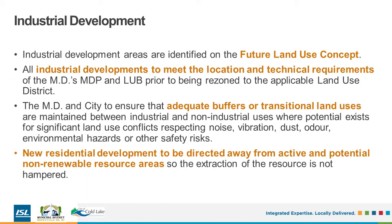Next, let's review the IDP's industrial development policies. As is the case with country residential development, industrial areas located in the future growth area will transition to city industrial development if annexed. All industrial development is required to meet the requirements of the MD's MDP and LUB prior to being rezoned to the applicable land use district. Adequate buffers or transitional land uses are to be maintained between industrial and non-industrial uses to reduce the chance of land use conflicts relating to noise, vibration, dust, odor, environmental hazards, or other factors. In addition, new residential development is to be directed away from active resource development sites so the extraction of the resource is not hampered.